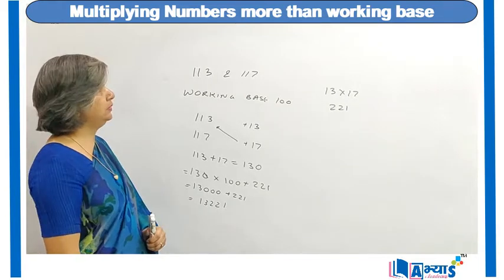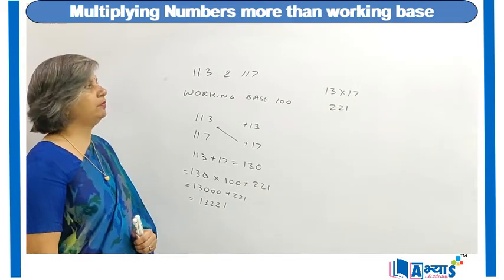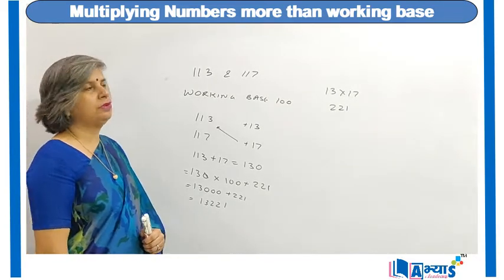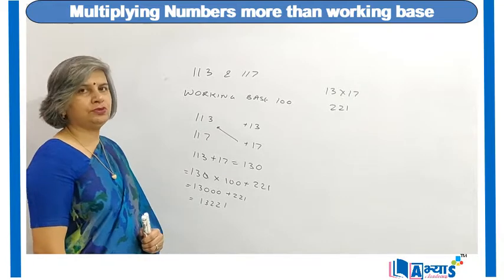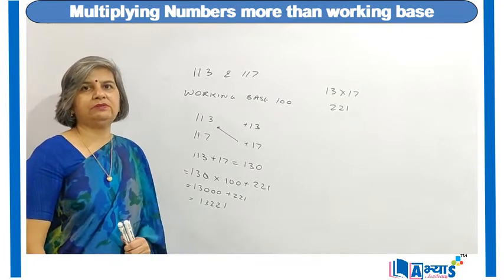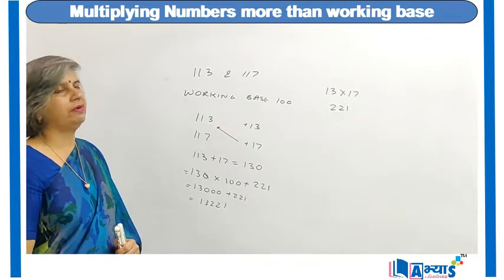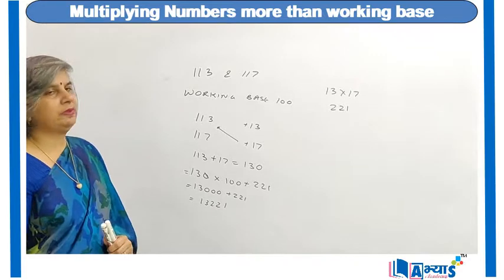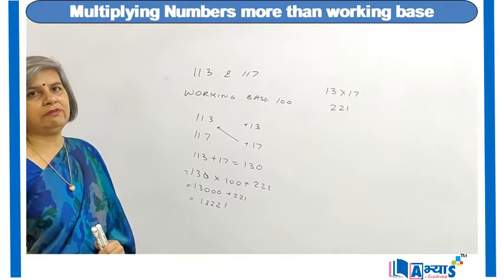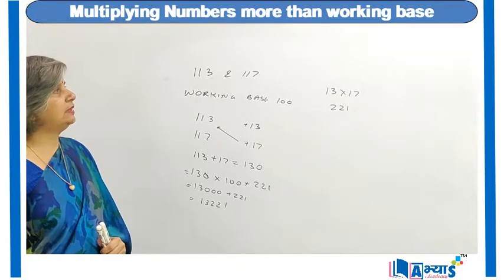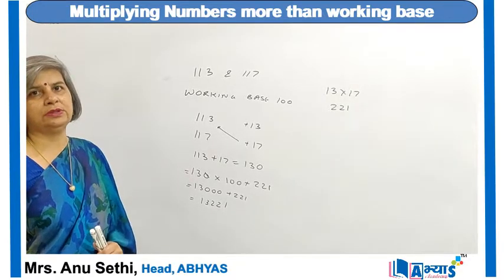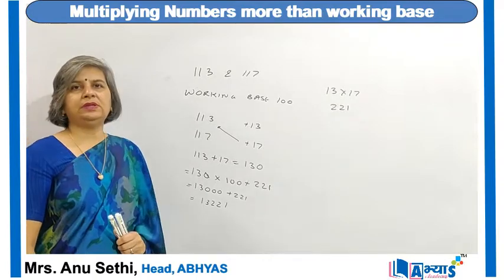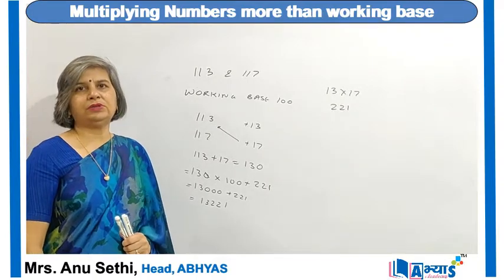This is how we can multiply two numbers more than the working base. Without performing actual multiplication, we can get the result in a very fast way. If we practice this method, it will take very less time compared to normal multiplication, and will help us in larger calculations.